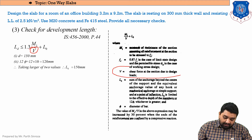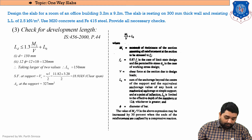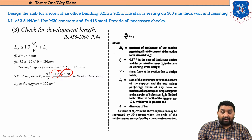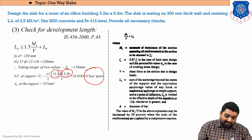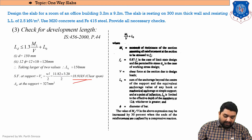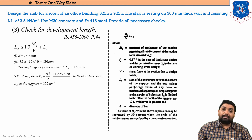For V (shear force at support), we use V = wL/2. For shear force, we do not use the effective span — we always use the clear span. The clear span given in the question is 3.2 m. So V = w × 3.2 / 2 = 18.91 kN. The Ast at support for main steel is 327 mm².